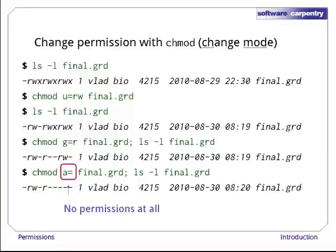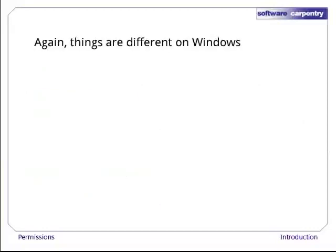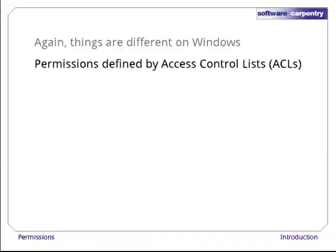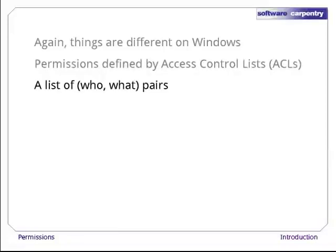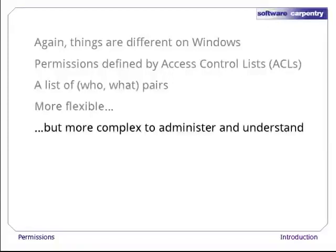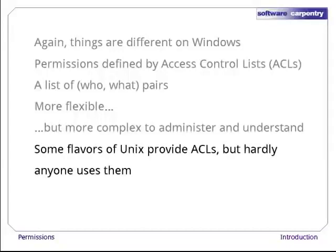Those are the basics of permissions on Unix. As we said at the outset, things work differently on Windows. There, permissions are defined by access control lists, or ACLs. An ACL is a list of pairs, each of which combines a who with a what. For example, you could give the mummy permission to append data to a file without giving him permission to read or delete it, and give Frankenstein permission to delete a file without being able to see what it contains. This is more flexible than the Unix model, but it's also more complex to administer and understand. Some modern variants of Unix actually support ACLs as well as the older read-write-execute permissions, but hardly anyone uses them.